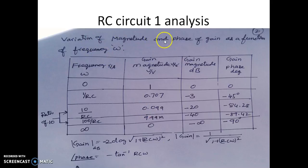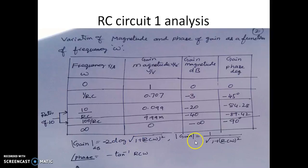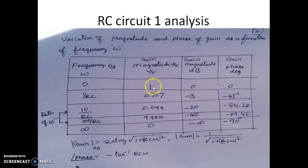Let us see the variation of magnitude and phase of the gain as a function of angular frequency ω, for which we have made a table. The columns are: frequency in radians per second, magnitude in volts/volt, magnitude in dB (which is 20 log of that ratio), and the phase in degrees. Substituting ω = 0 gives magnitude = 1 and gain = 0 dB. Substituting ω = ∞ gives magnitude = 0 and gain = −∞ dB, since 1/∞ = 0.